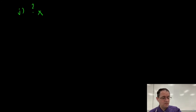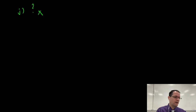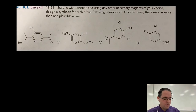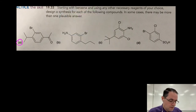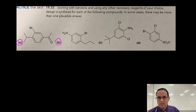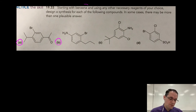They also talk about poly-substituted rings, which requires a little bit more work — you can read the example yourself. Now let's do problem 1933. In problem 1933, we'll work through parts A and B together. Starting with benzene and anything else you need, do a synthesis — there might be more than one answer.